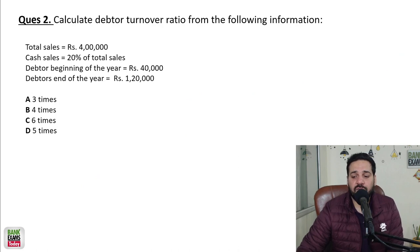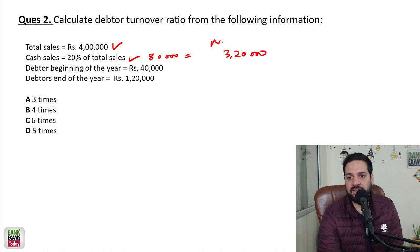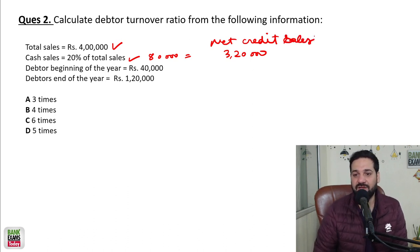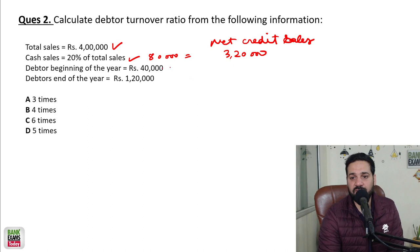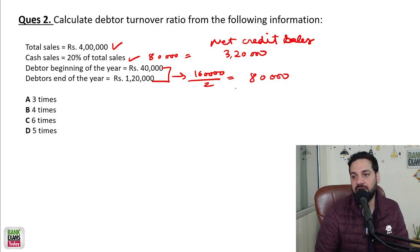Let's calculate the debtor turnover ratio. Total sales is 4 lakhs; out of that, cash sales is 20%, which is 80,000. So net credit sales is 3,20,000. Average debtor is 40,000 plus 1,20,000 divided by 2, which equals 80,000. So we have both net credit sales and average debtors.